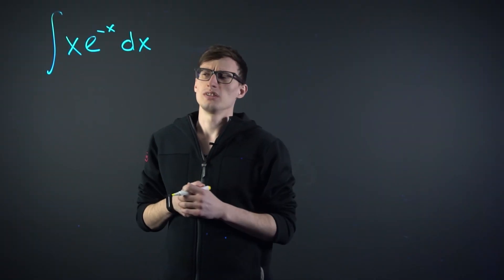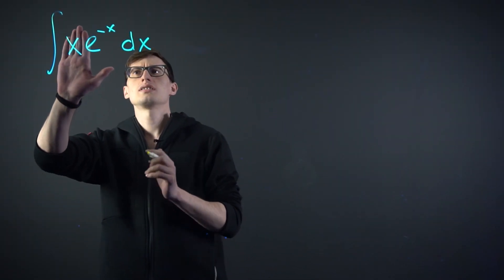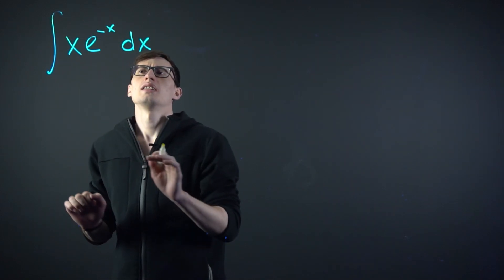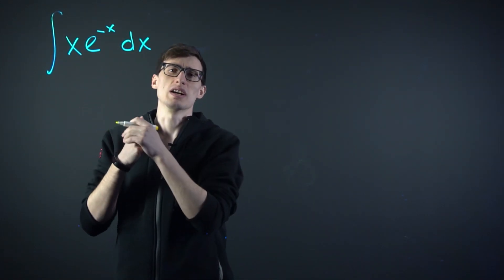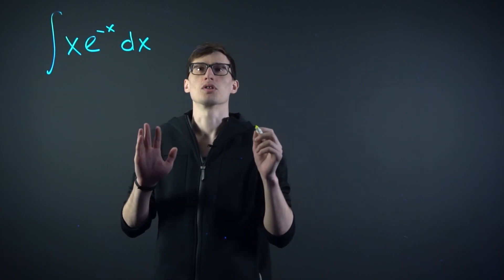So let's try to solve this integral. And as you can see, if it was just e to the minus x or just x, it would be simple. But this is a hot mess. So what we have to do here is something called integration by parts.